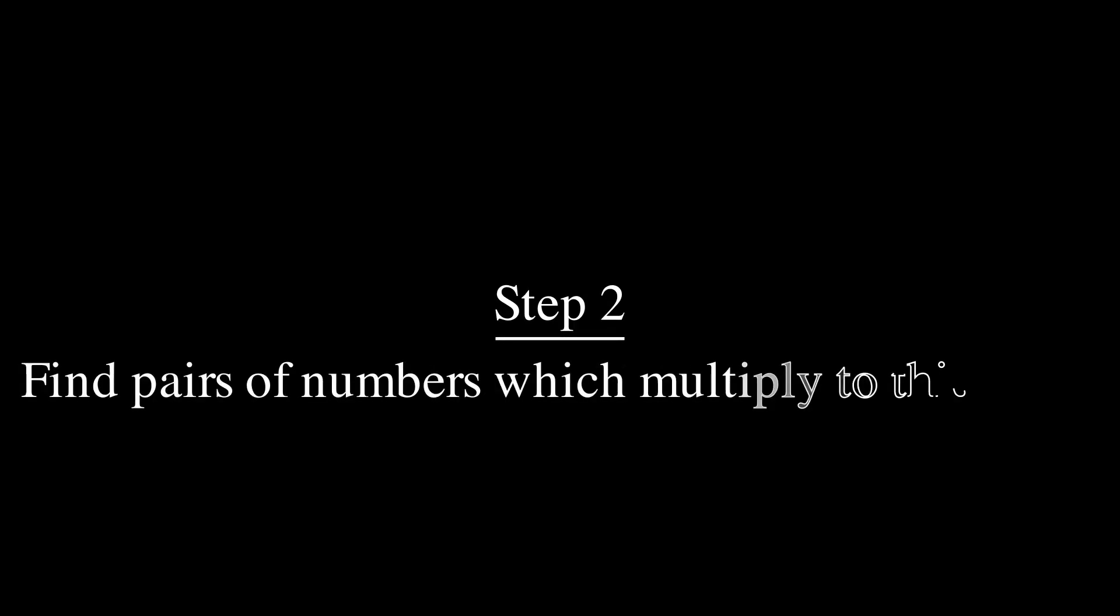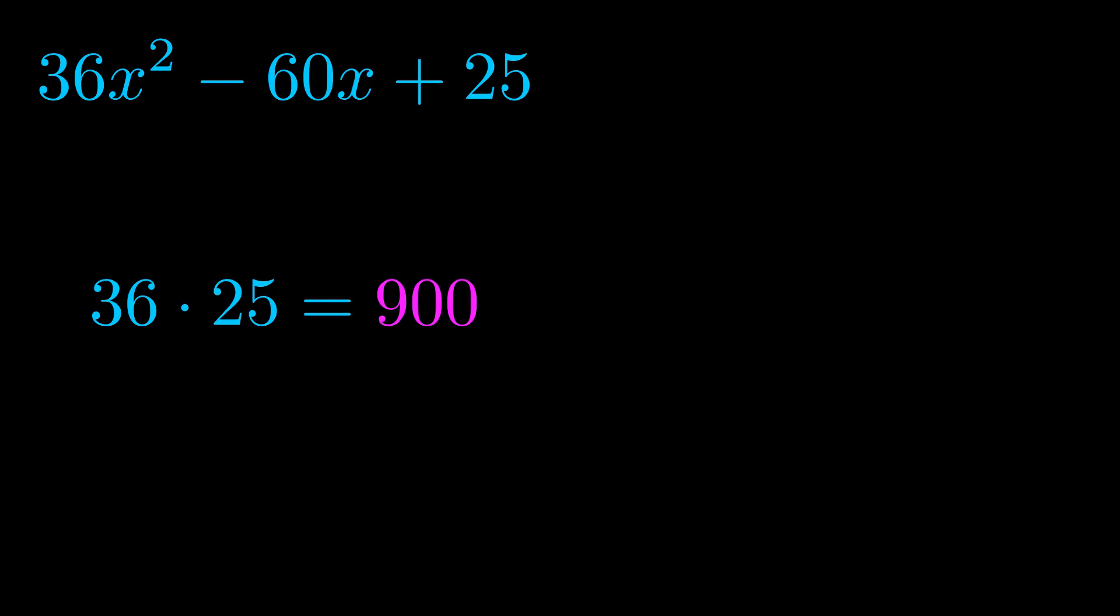Step two is to try to find all of the pairs which multiply to this number. Now it turns out you don't really need to find all of them, but go ahead and write down as many numbers as you can that multiply to the magenta value for now.